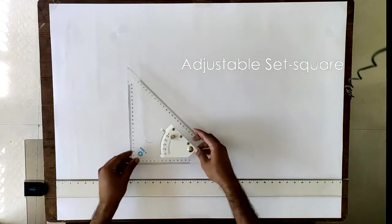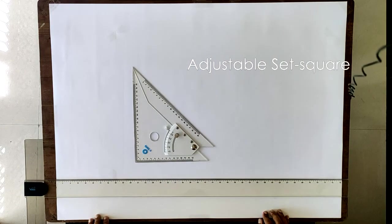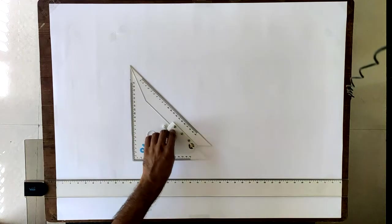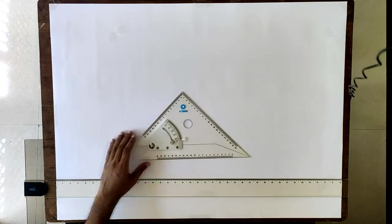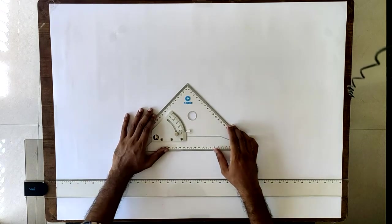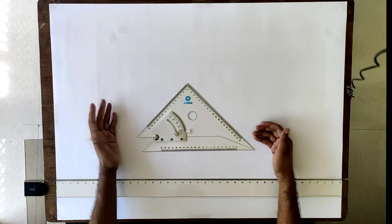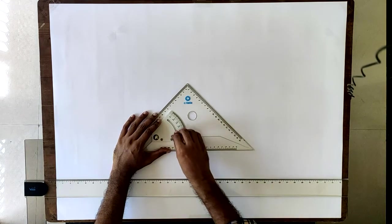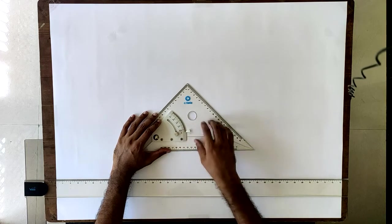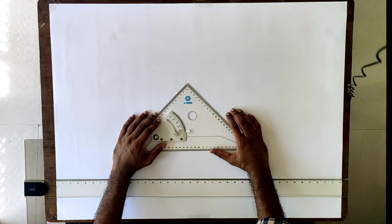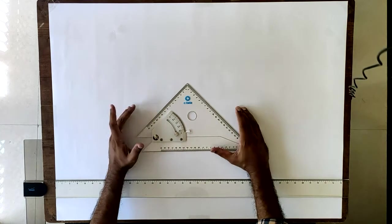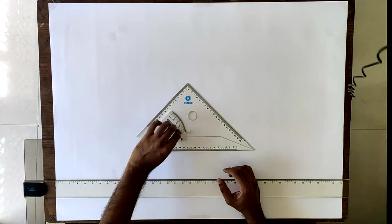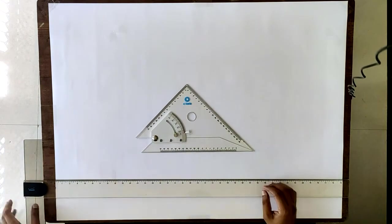The next instrument that we are going to explain is the set square. You might have used set squares in your school time, the small 45-45 set square and the 30-60 set square. But this time we are going to use an adjustable set square. This is much bigger than the set squares you have been using in school because you are going to make bigger lines. Another important aspect is you are going to make lines which are inclined in all sorts of angles, not just 30, 45, or 60 degrees. So you need an adjustable set square.